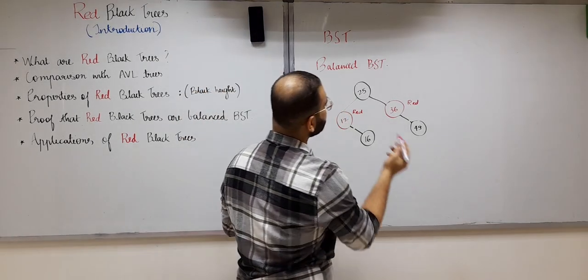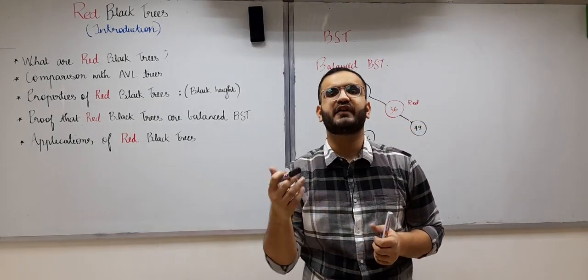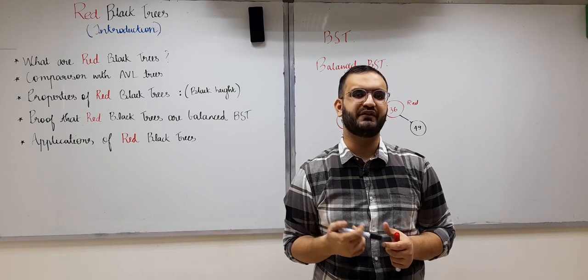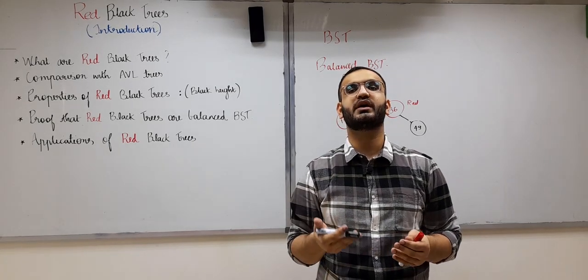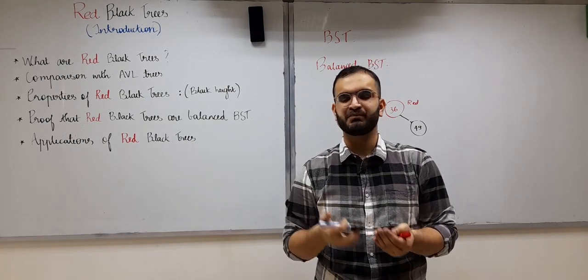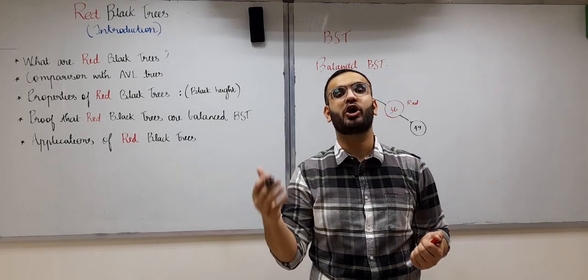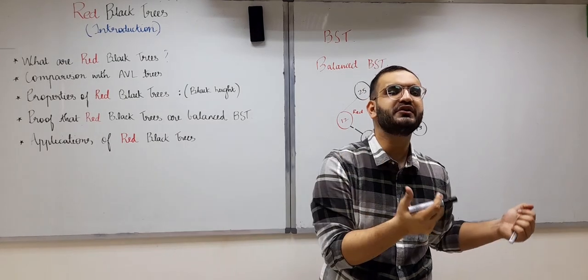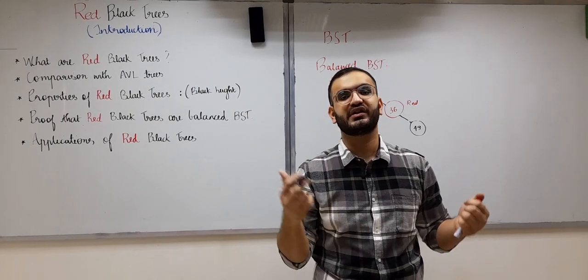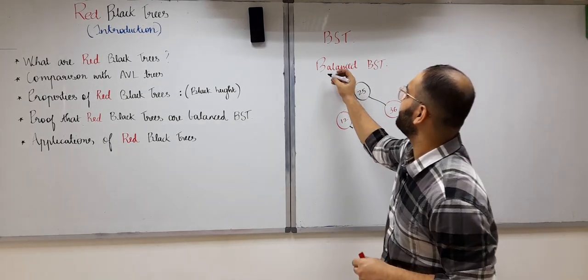This tree is also balanced. We need to understand why we need a balanced binary search tree. AVL trees have a height of log n, where n is the number of nodes. Every operation gives a time complexity of the order of the height of the BST. So if the height is of the order of log n, every operation like search, insert, and delete will take O(log n) time. That is why we actually need balanced binary search trees.